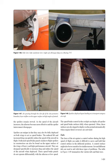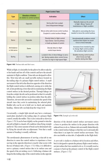The force of the air against a control surface during high-speed flight can make it difficult to move and hold the control surface in the deflected position. A control surface might also be too sensitive for similar reasons. Several different tabs are used to aid with these types of problems. While in flight, it is desirable for the pilot to be able to take his or her hands and feet off of the controls and have the aircraft maintain its flight condition — trim tabs are designed to allow this. Most trim tabs are small movable surfaces located on the trailing edge of a primary flight control surface. A small movement of the tab in the direction opposite to the flight control surface deflection causes air to strike the tab, producing a force that aids in maintaining the flight control surface in the desired position. Through linkage set from the cockpit, the tab can be positioned so that it is actually holding the control surface in position rather than the pilot. Elevator tabs maintain aircraft speed by assisting in maintaining the selected pitch; rudder tabs can hold yaw and maintain heading; aileron tabs can help keep the wings level.